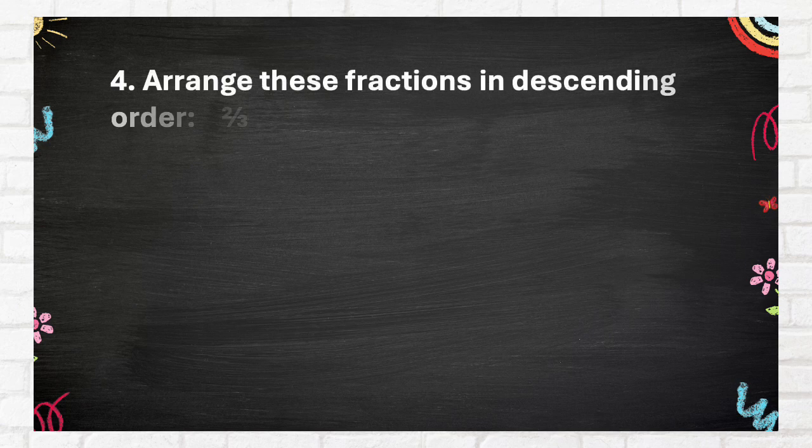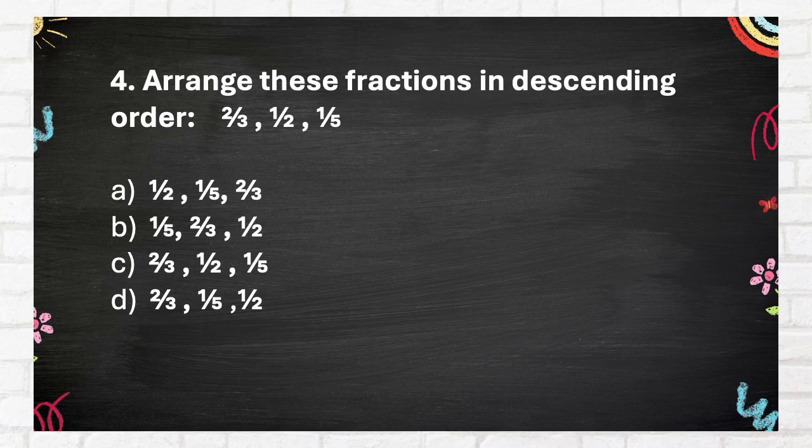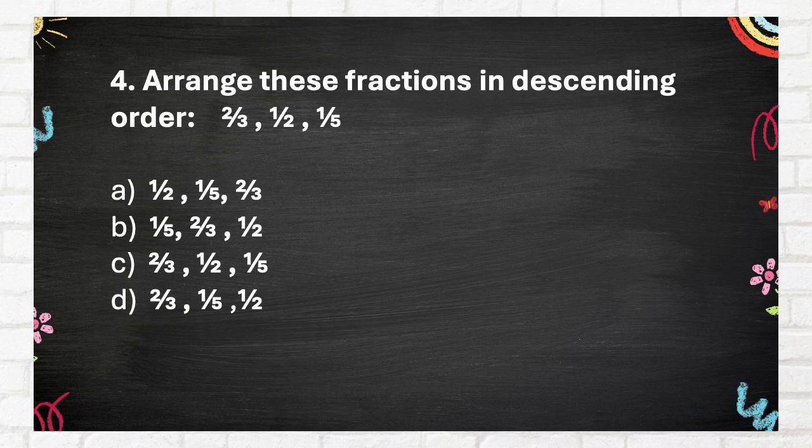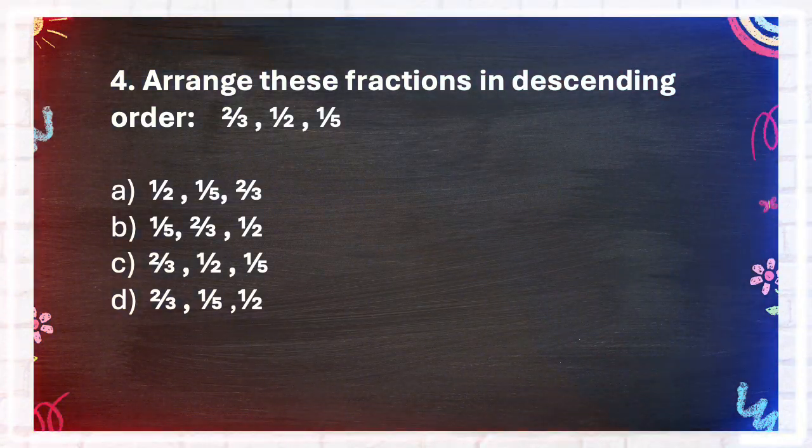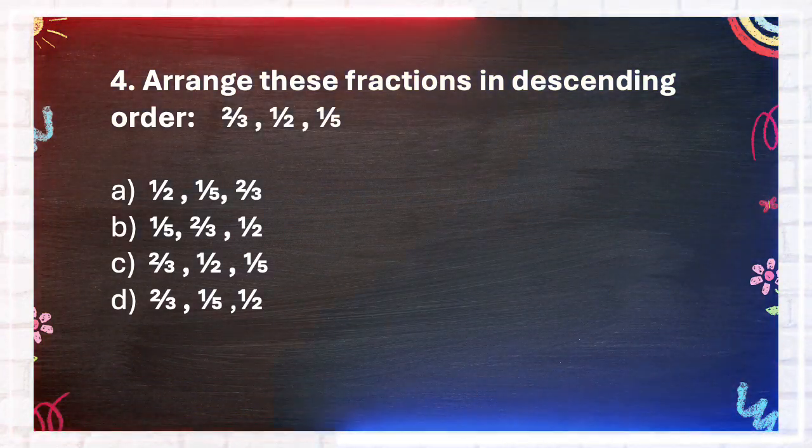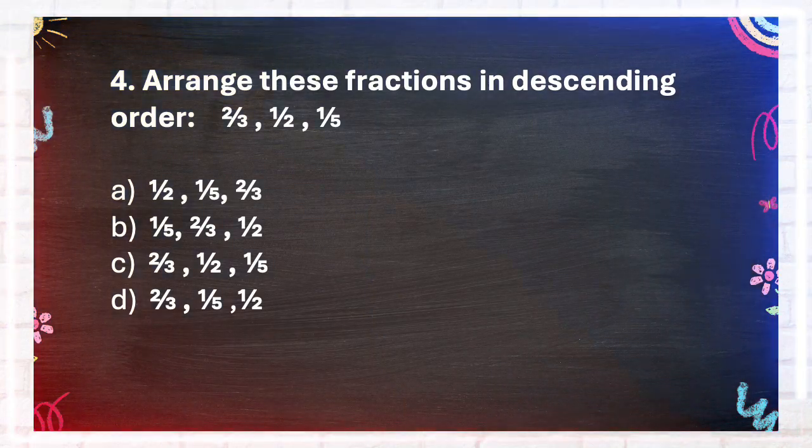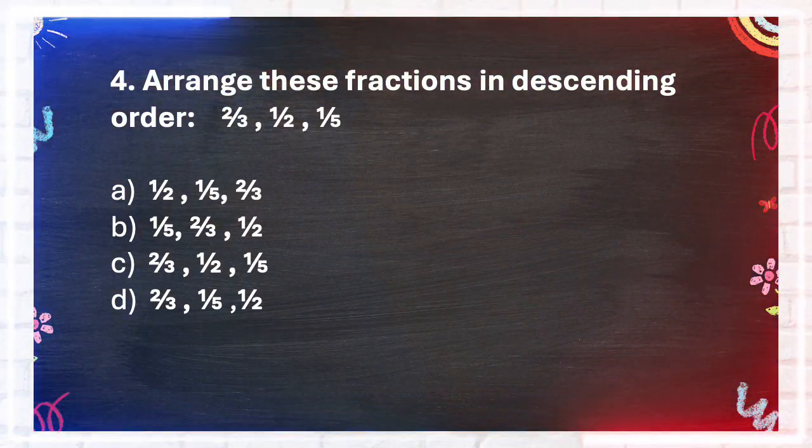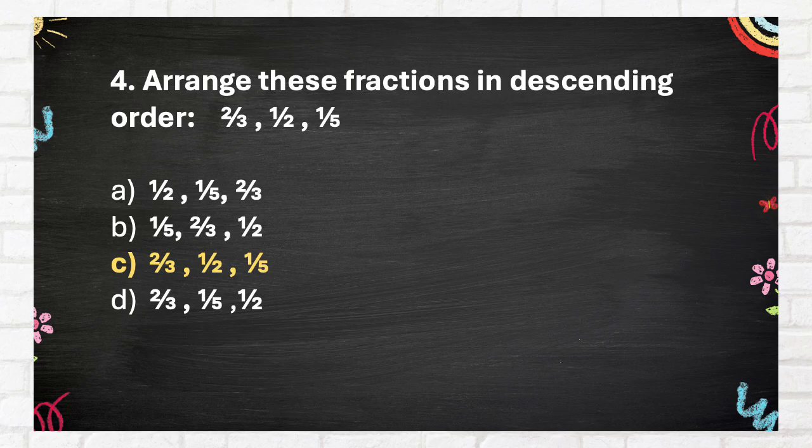Question number 4. Arrange these fractions in descending order. A one-half, one-fifth, two-thirds. B one-fifth, two-thirds, one-half. C two-thirds, one-half, one-fifth. D two-thirds, one-fifth, one-half. The answer is C, two-thirds, one-half, one-fifth.